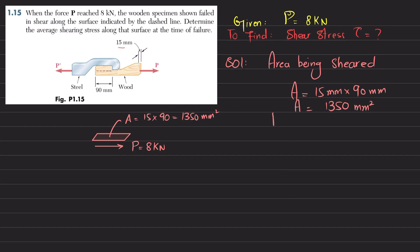And the load which is 8 kilo Newton, so 8 × 10³ Newton. We know that shearing stress is equal to shear force divided by shear area. So force is given 8 × 10³ Newton divided by area 1350 square millimeter.